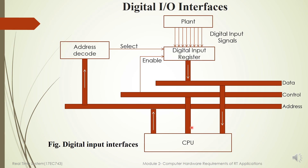To read the Digital Input Register, the computer has to place the address on the address bus, and then some decoder circuitry in the interface is needed to select the DIR. To select this DIR, which is the Digital Input Register, a select line is required. In addition, an enable line is also required, which is provided by the read signal from the computer control bus. In response to both the select and enable signals being high, the Digital Input Register will enable its output gates and put data onto the data bus. That is how it reads lines connected from the DIR.